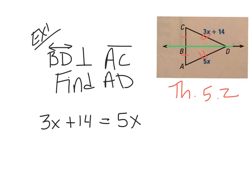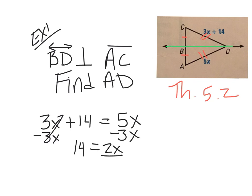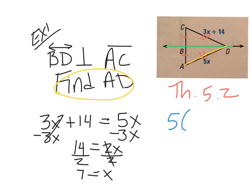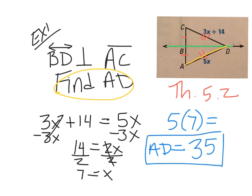I rearrange and solve for x. Subtract 3x from both sides — that gives 14 = 2x. Divide by 2, so x = 7. The question asked to find AD. AD corresponds to the expression 5x, so 5 times 7 equals 35. That would be your final answer.